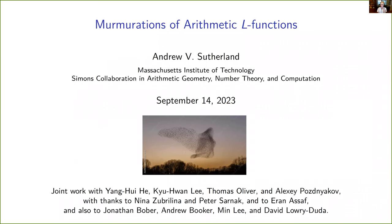Before we jump into the math, I wanted to at least explain the first word in my title, which I've discovered is not necessarily familiar to everyone. A murmuration refers to the movement of a group of birds — originally starlings. You can see an example of a murmuration of starlings in the picture on my front slide. But it was later extended to birds more generally, and more recently to elliptic curves, as we shall see.